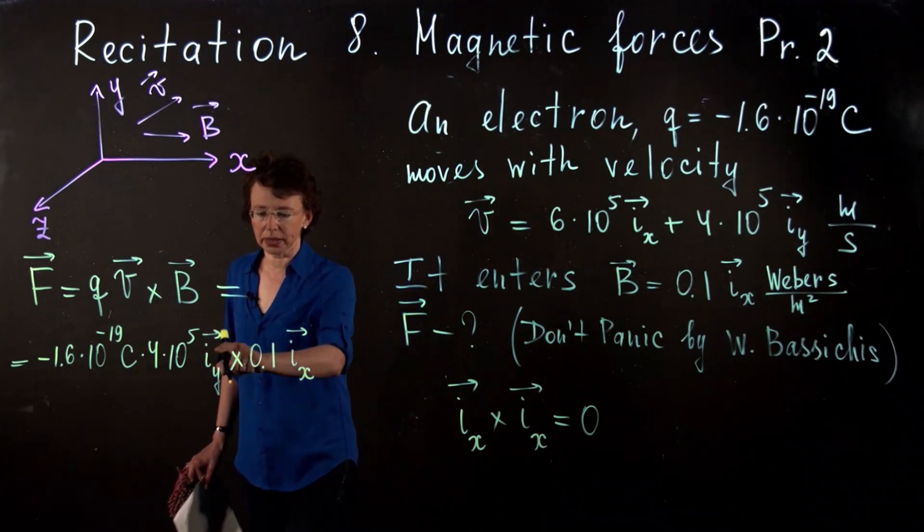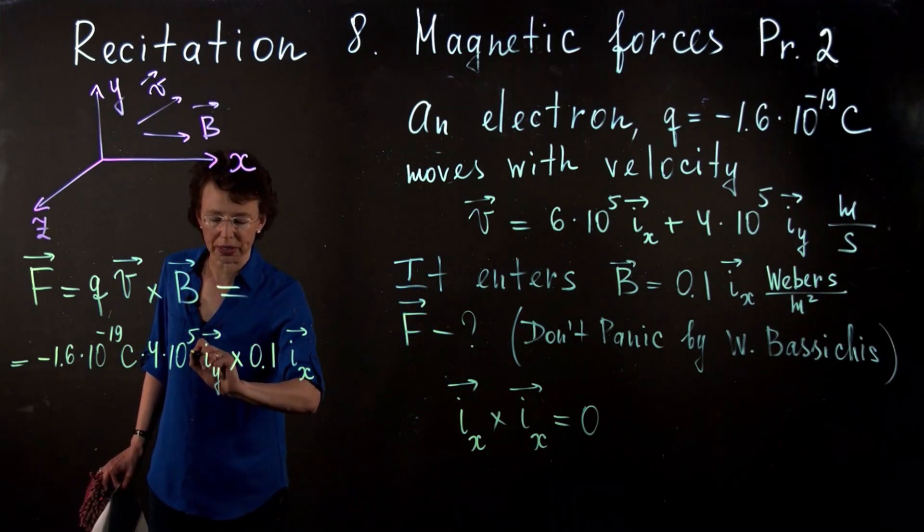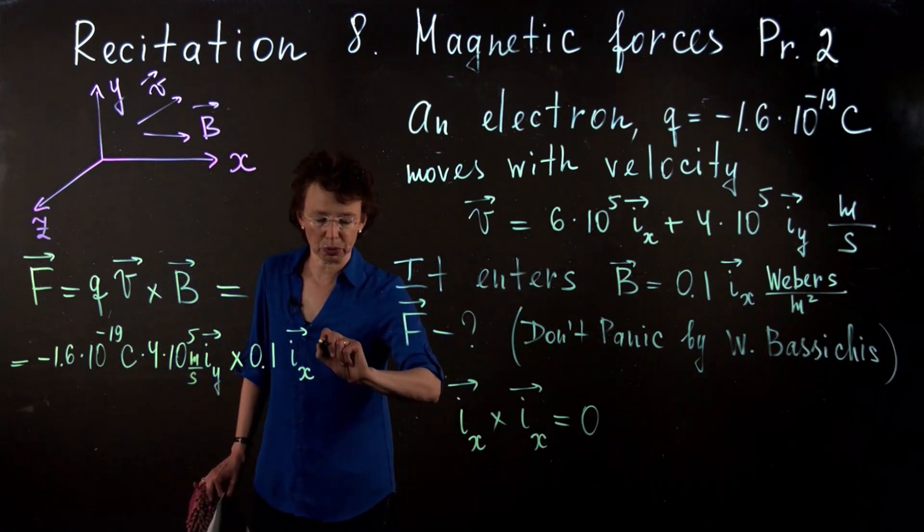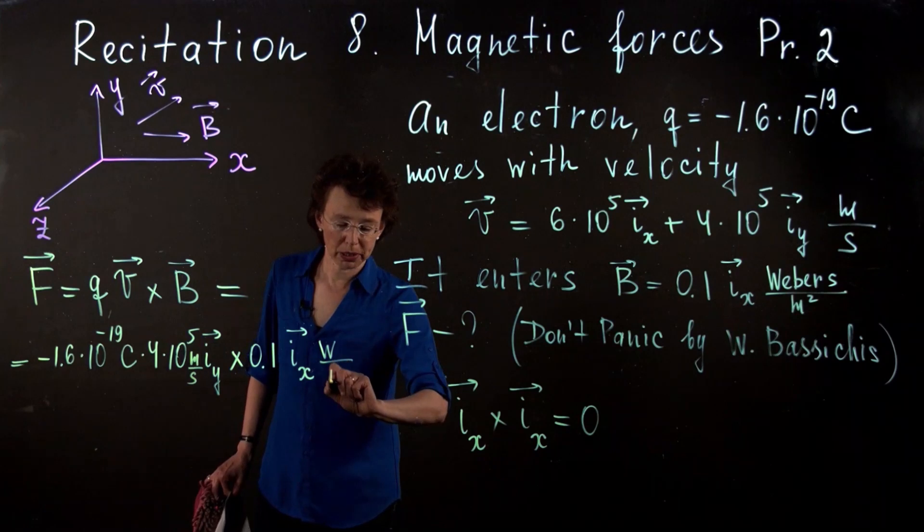I did not write the dimension for the velocity. Velocity is meters per second, and magnetic field will be webers per meter squared.